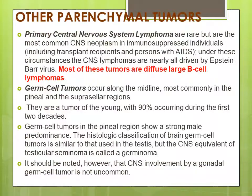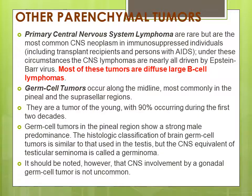Primary central nervous system lymphoma is rare but is the most common neoplasm in immunosuppressed patients, including AIDS patients and transplant recipients. Epstein-Barr virus is implicated in its development. Most are diffuse large B-cell lymphomas. Germ cell tumors occur along the midline, most commonly in the pineal and suprasellar regions. They occur in young patients, with 90% in the first two decades of life. Pineal lesions show strong male predominance. The CNS equivalent of testicular seminoma is called germinoma. CNS involvement by gonadal germ cell tumor is not encountered.